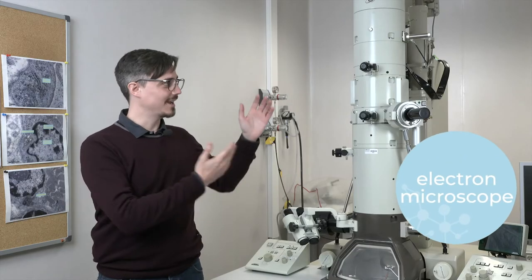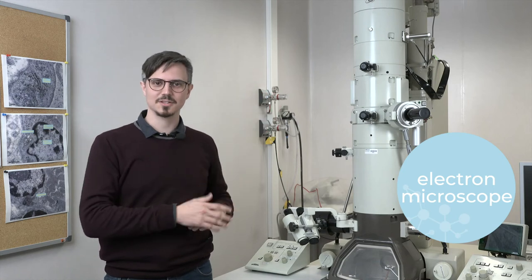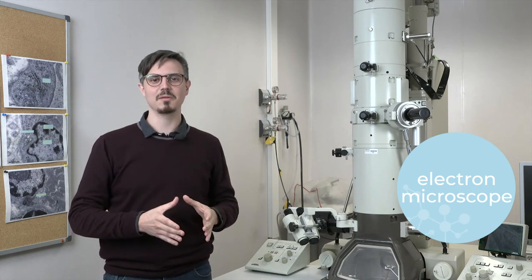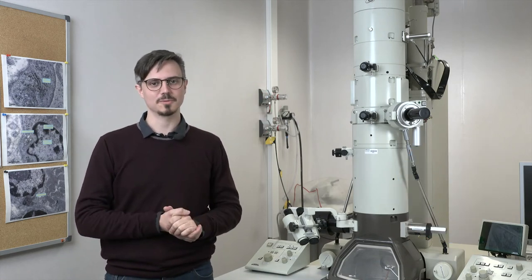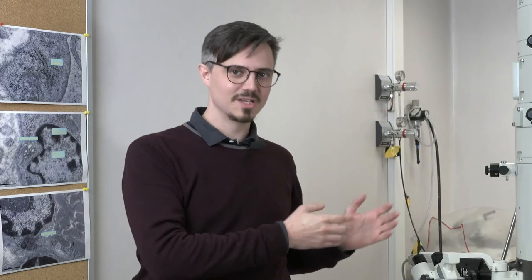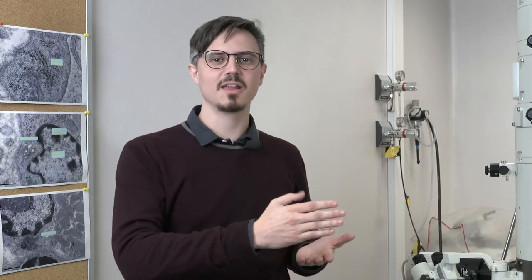Instead of photons, electron microscopes use electrons to generate an even more magnified image than the ones obtained with optical microscopes. Electron microscopes generate always grayscale images that can be colorized afterwards.